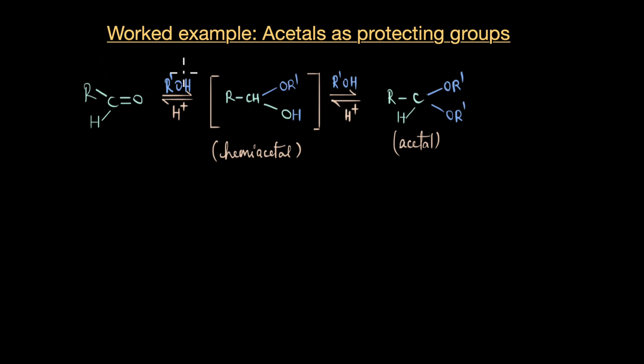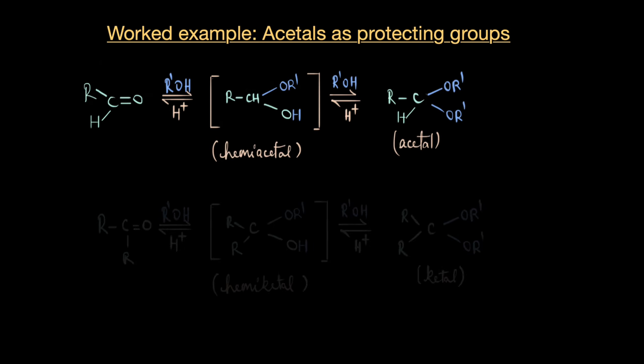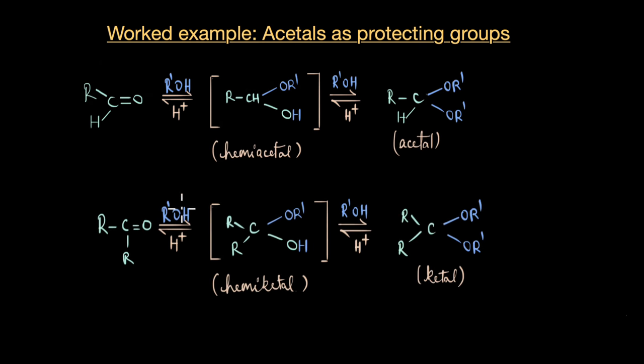As you can see here, two moles of alcohols react with a mole of aldehyde to give us acetal. With one mole of alcohol, we get a hemiacetal and with two moles, we get an acetal. Similarly, ketones also react with a mole of alcohol to form hemiketal and with another mole, it gives us a ketal. Now, even though ketals specifically refer to the formation from ketones, acetals in general can refer to both of these structures.